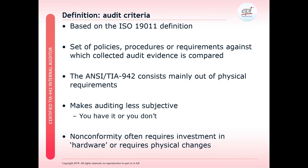Based on the ISO 19011 definition, audit criteria can be sets of policies, procedures or requirements against which evidence is collected and compared. However, the ANSI TIA 942 consists mainly of physical requirements — i.e. do you have it or not have it? So with an ANSI TIA audit, it is less subjective.